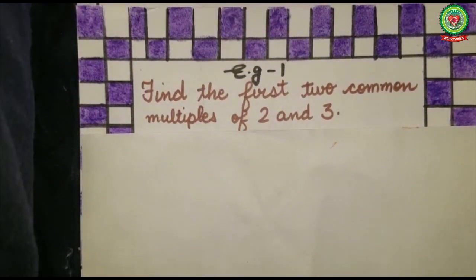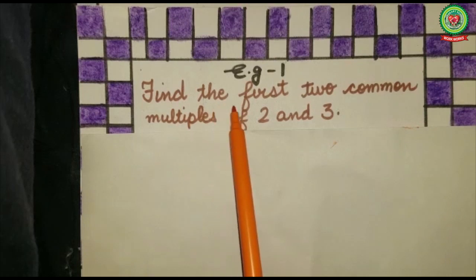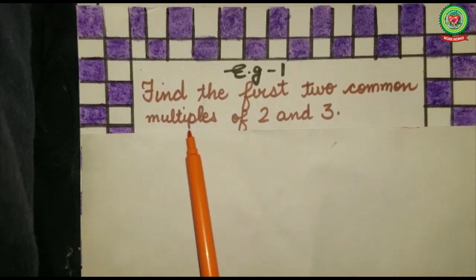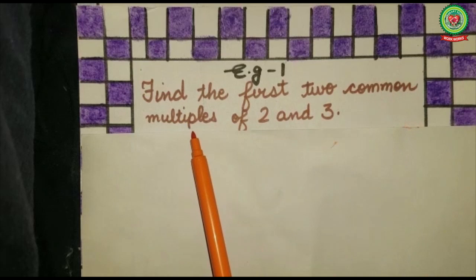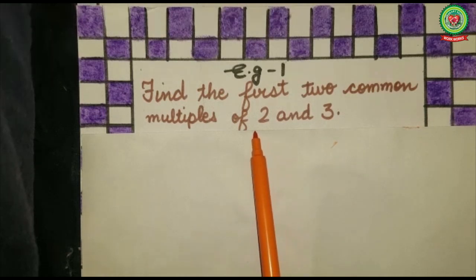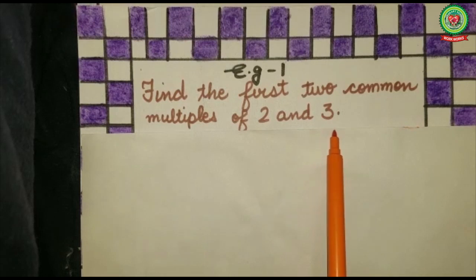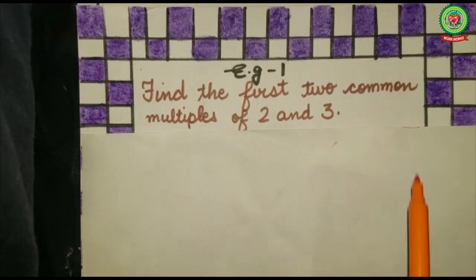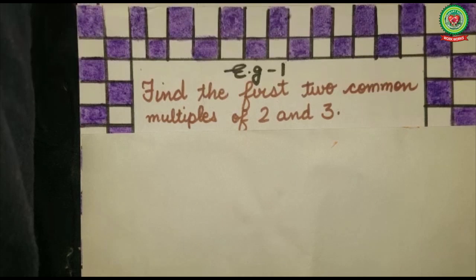Example number one: find the first two common multiples of two and three. To find the common multiples, I will first write the multiples of two and the multiples of three. After writing them, I'll check the common multiples — meaning the same multiples that appear in both lists. So let's write down the multiples of two.